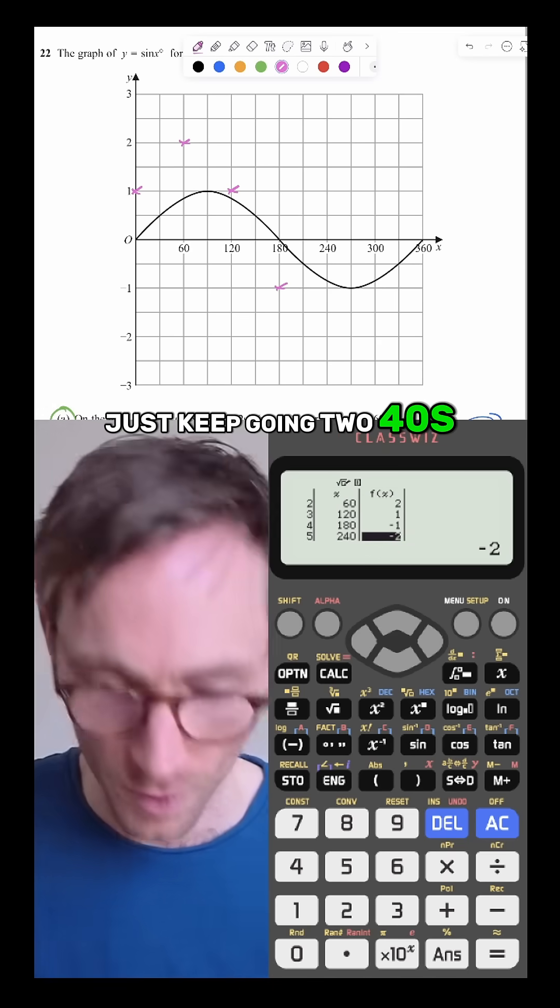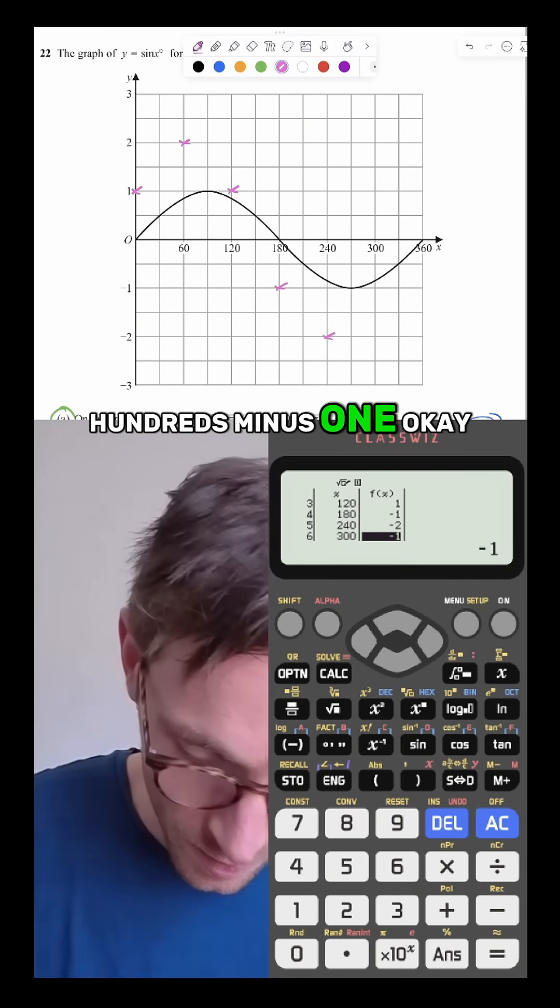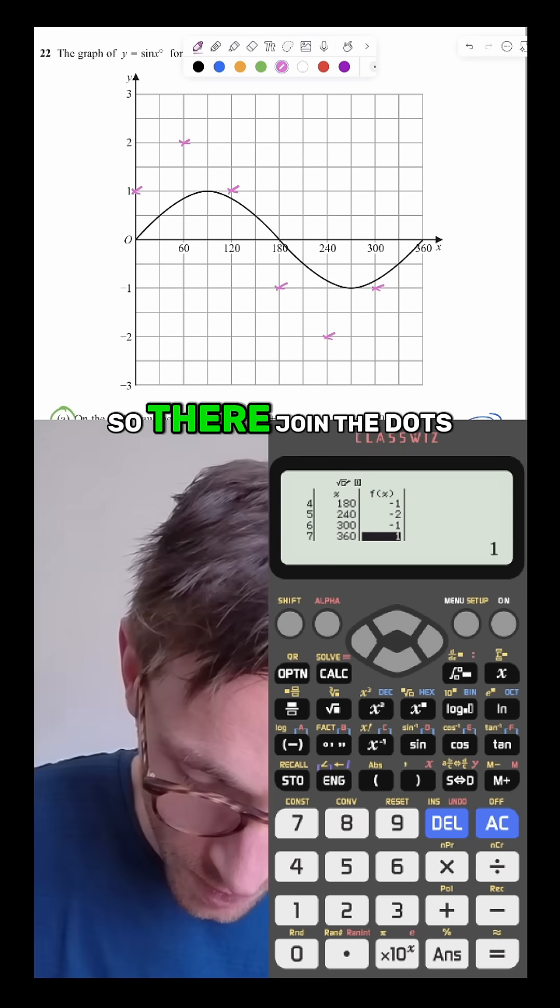240 is minus 2. Okay, and 300 is minus 1. Okay, and then there it goes back to 1. So there, join the dots. There you go.